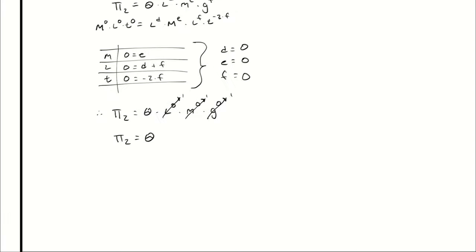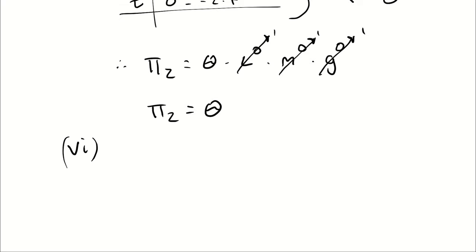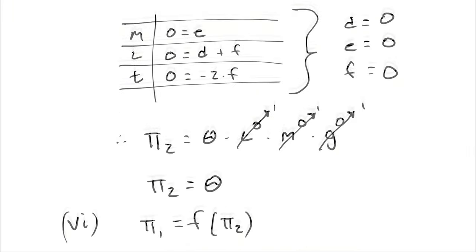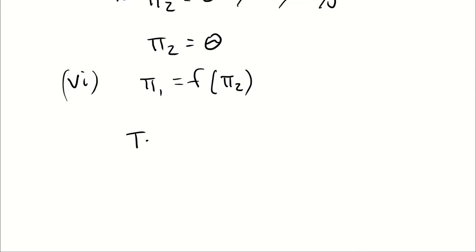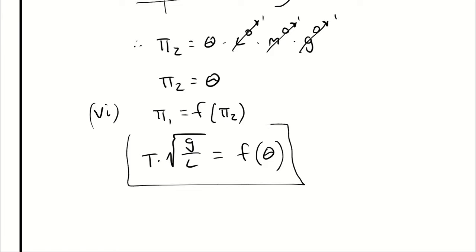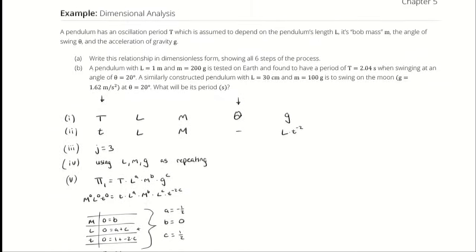From the two pi groups, I can state that pi group one is a function of pi group two. In other words, the period of oscillation times the square root of gravity over length is a function of theta. With that, I can approach part b of the problem.